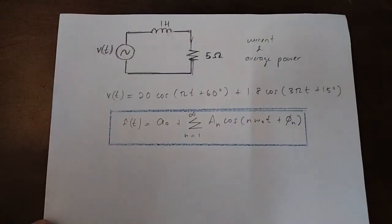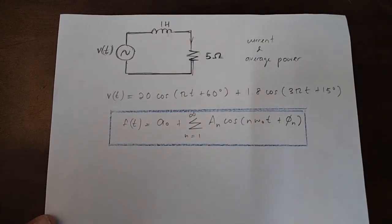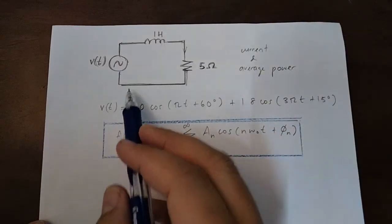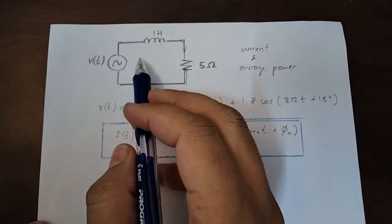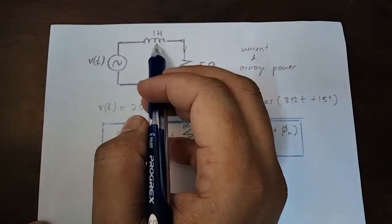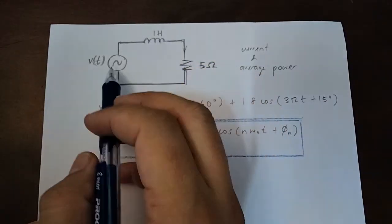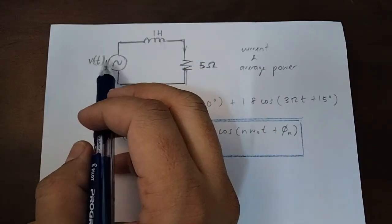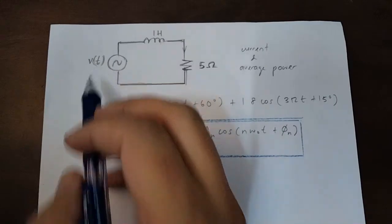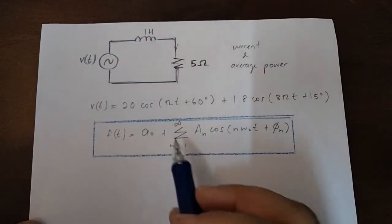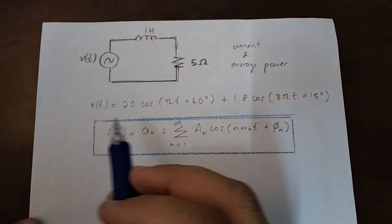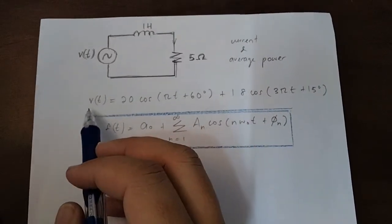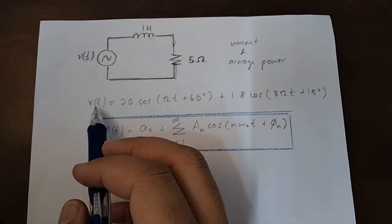In this video, we will look at this example. We have a circuit consisting of R and L, and the circuit is supplied with a variable voltage source V(t). The voltage input or supply voltage is given as follows.